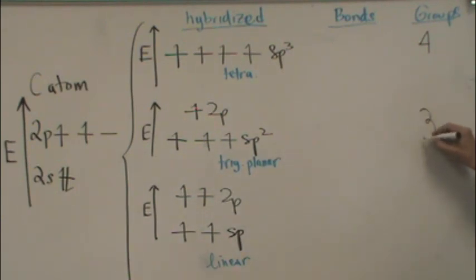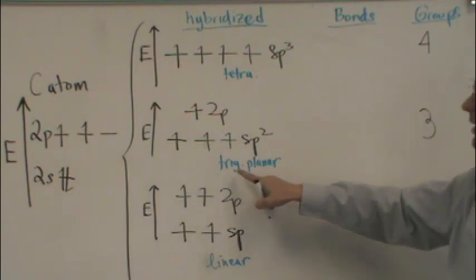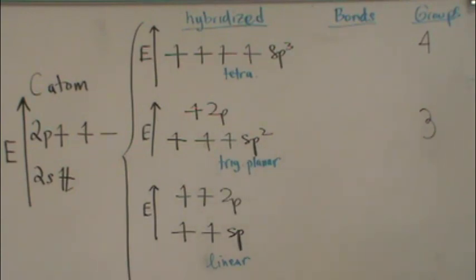If you count three groups in VSEPR, then that means the carbon atom is hybridizing trigonal planar. And likewise, two groups means a linear.